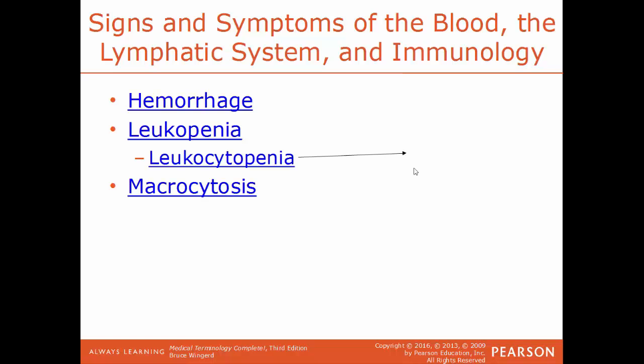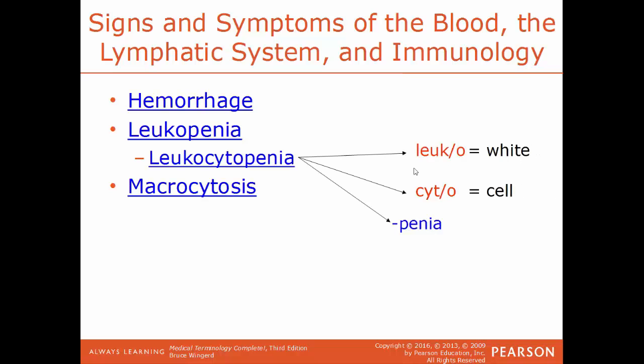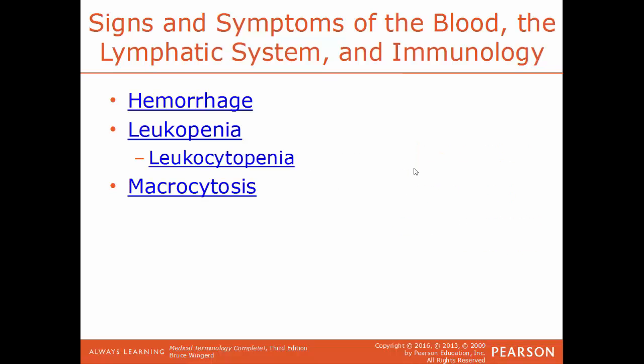Breaking down leukocytopenia: leuko means white, cytos means cell, and penia means deficiency or abnormal reduction. Both leukocytopenia and leukopenia reference the same condition — a deficiency or abnormal reduction of white blood cells.